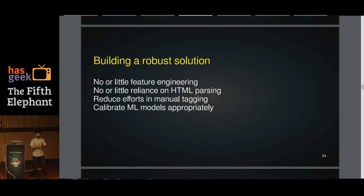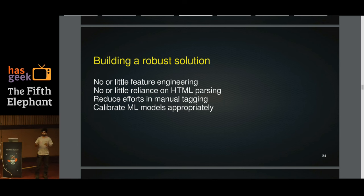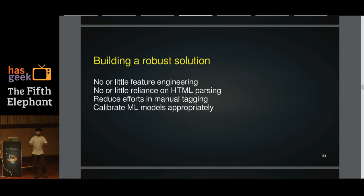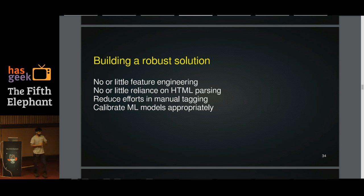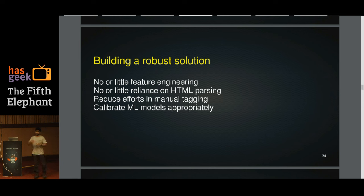For the rest of the talk, I'll focus on the text and image parsing block. To build this, we wanted a solution that requires as little feature engineering as possible and as little reliance on HTML tags or parsing as possible, because these things change quickly. Being a startup, we didn't have the luxury of getting a lot of data tagged manually. We also want to ensure that the machine learning models we build are properly calibrated — if a model predicts something, it should do so with very high confidence.